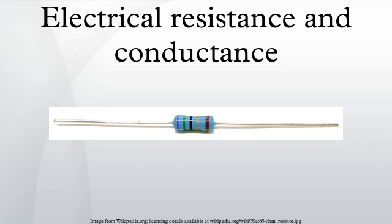The resistance of a given object depends primarily on two factors: what material it is made of, and its shape. For a given material, the resistance is inversely proportional to the cross-sectional area. For example, a thick copper wire has lower resistance than an otherwise identical thin copper wire. Also, for a given material, the resistance is proportional to the length. For example, a long copper wire has higher resistance than an otherwise identical short copper wire.